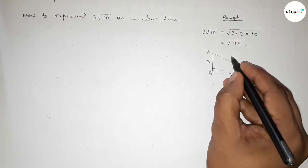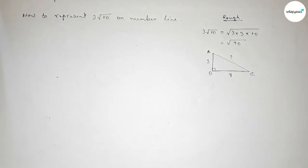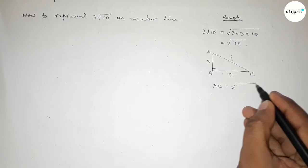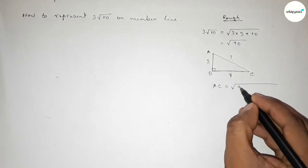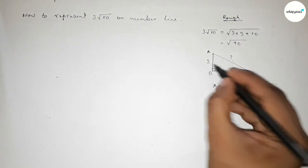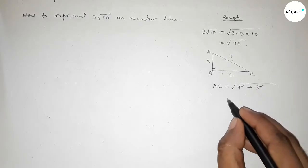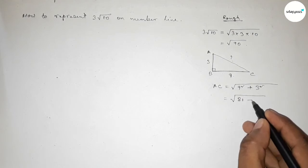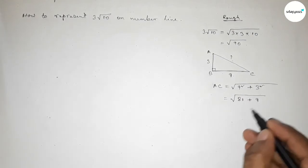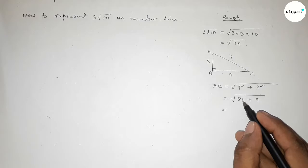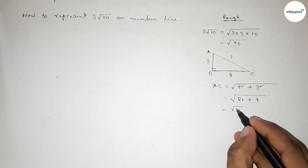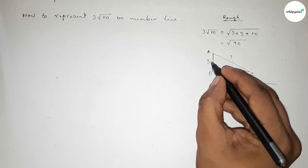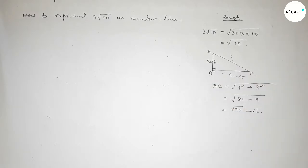Now taking the base BC, so this is 9 unit, and taking the perpendicular AB equal to 3. Then what is hypotenuse? So by Pythagoras theorem, hypotenuse equal to root over base square, so 9 square plus perpendicular square equal to 3 square. So this is 9 times 9 is 81 plus 3 times 3 is 9.